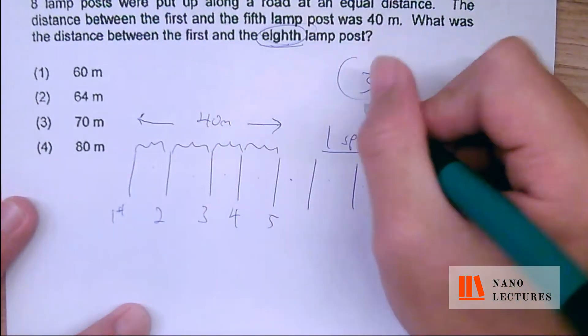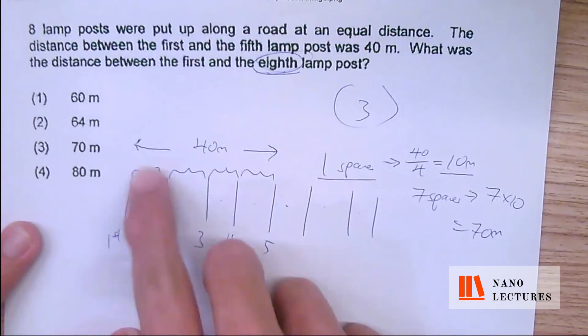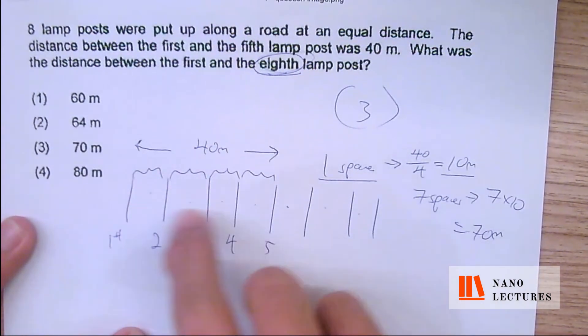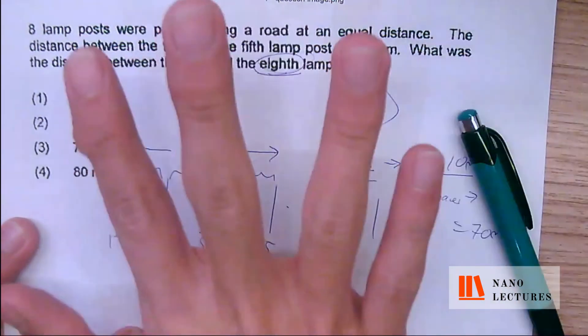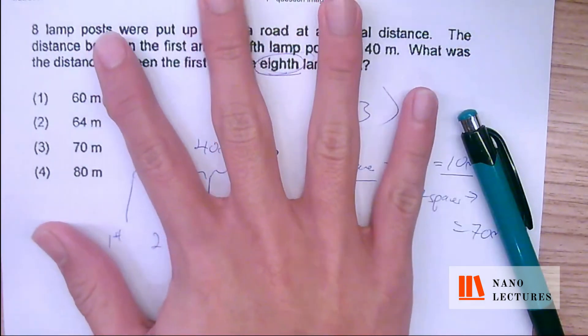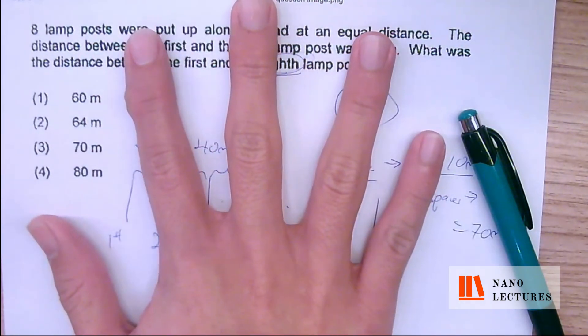Answer is 3. So if parents are watching this, a lot of children are unable to visualize the problem. Most of them will tell you that there are 5 spaces between 5 fingers or 5 lampposts.